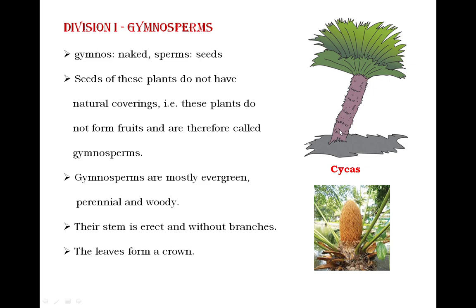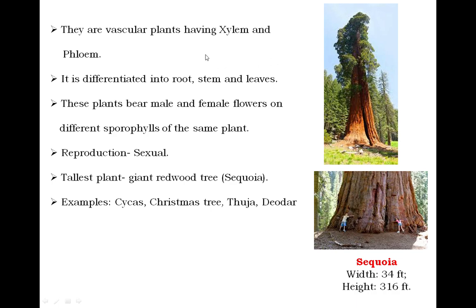The stem of gymnosperm plants is erect and without branches. When we observe the figure of Cycas, the stem is very erect and does not contain branches — this is a unique feature of gymnosperms. The leaves of gymnospermic plants form a crown at the tip of the stem.